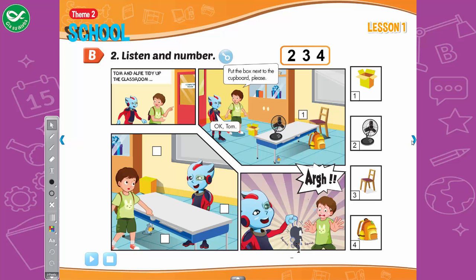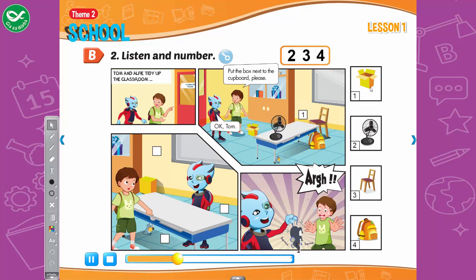B. 2. Listen and number. Look at the pictures. Listen. There is one example. One: Oh, no! Okay, Alfie. Let's put the box next to the cupboard, please. Okay, Tom. Can you see number one? This is an example.